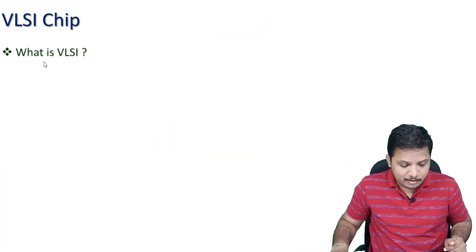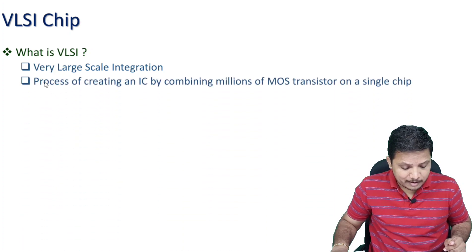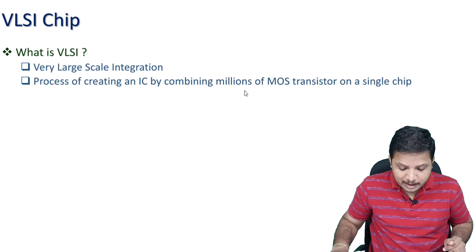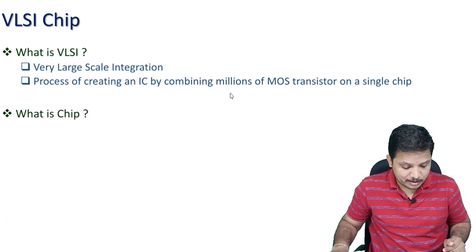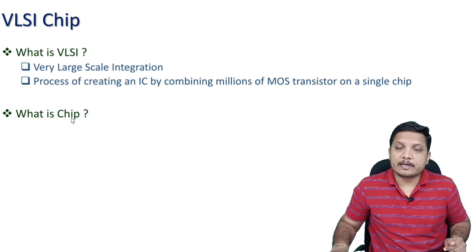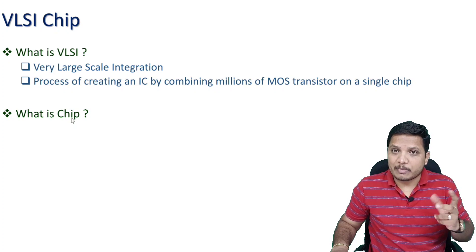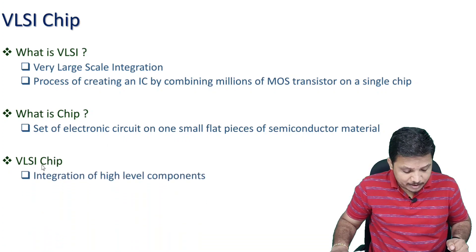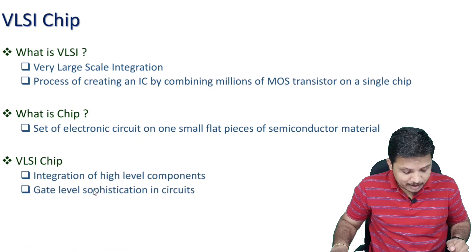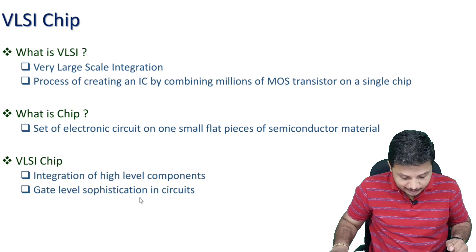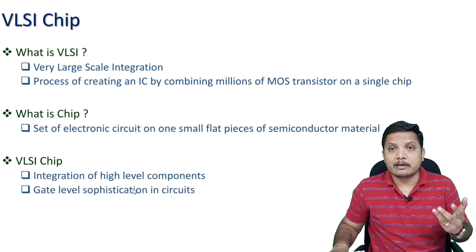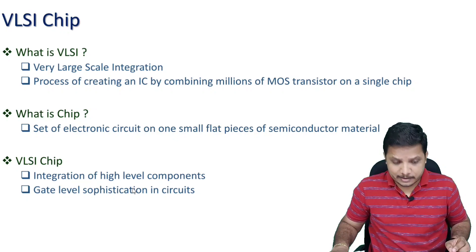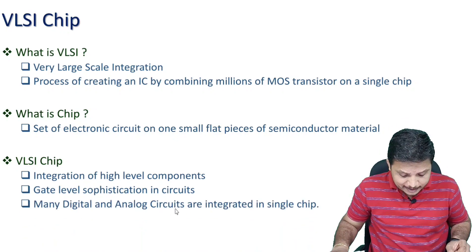In VLSI, we combine millions of MOS transistors in a single chip. A chip integrates a set of electronic circuits on a small, flat piece of semiconductor material. In a VLSI chip, we integrate high-level components with gate-level sophistication — including multiplexers, timers, counters, and many analog as well as digital circuits — all in a single chip.